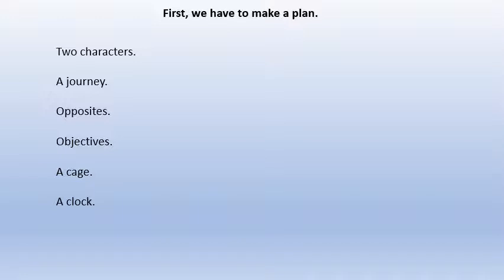We use the framework: opposites, objectives, a cage, and a clock. The antagonist and protagonist don't literally have to be opposites, but they have to be clearly distinct from each other — they have to want different things. Remember Jaws: the shark wants to eat him and he wants to shoot the shark and survive — those were their objectives. There has to be a cage, not literally, but a metaphorical cage — they have to be somehow stuck in the situation and can't just walk away, or there's no tension. And there has to be a clock — time has to be running down.